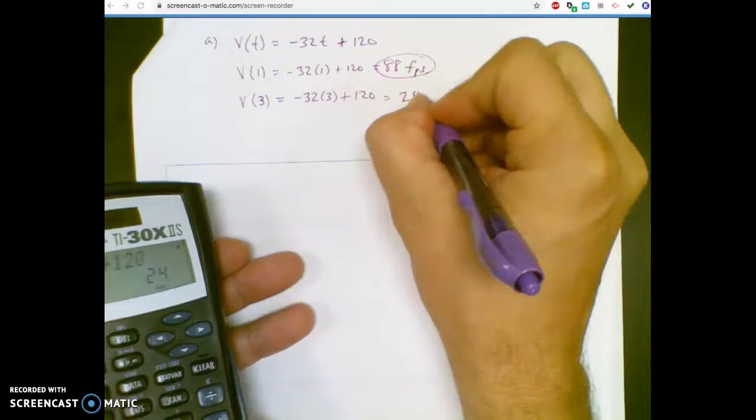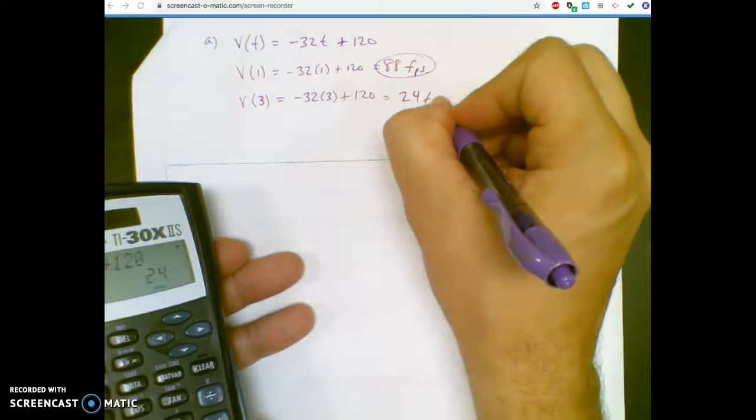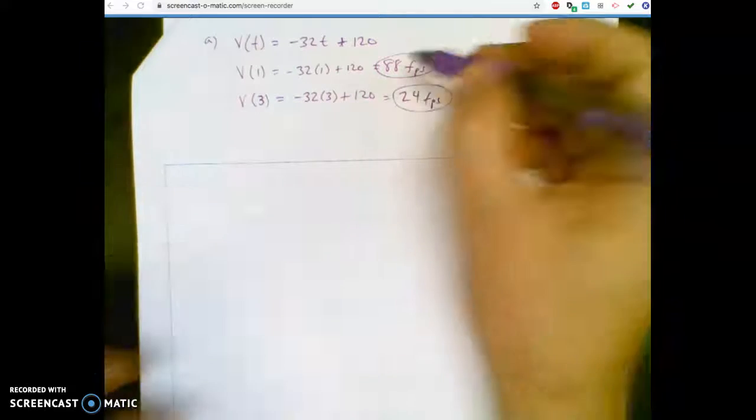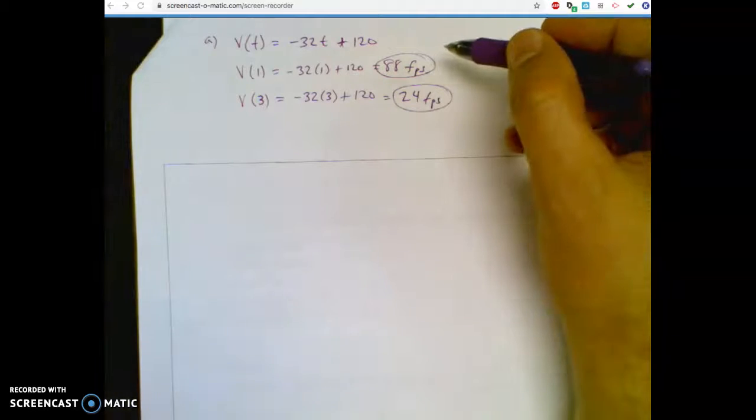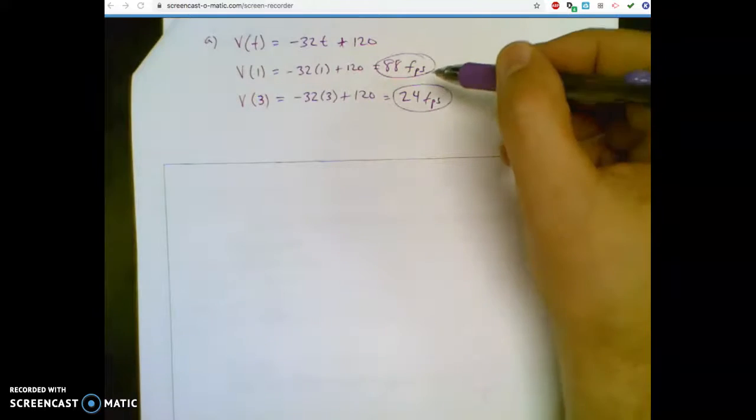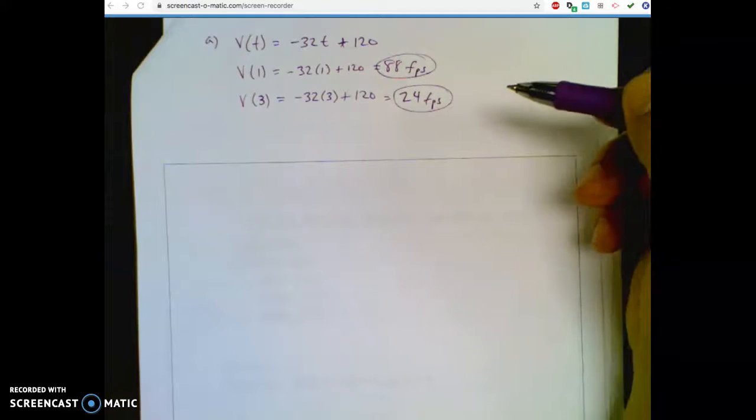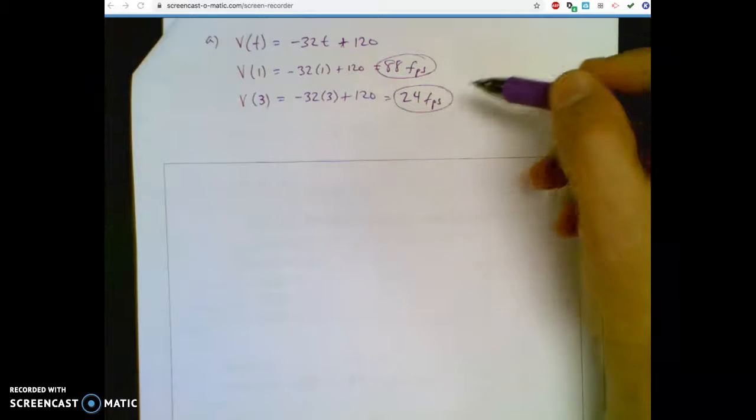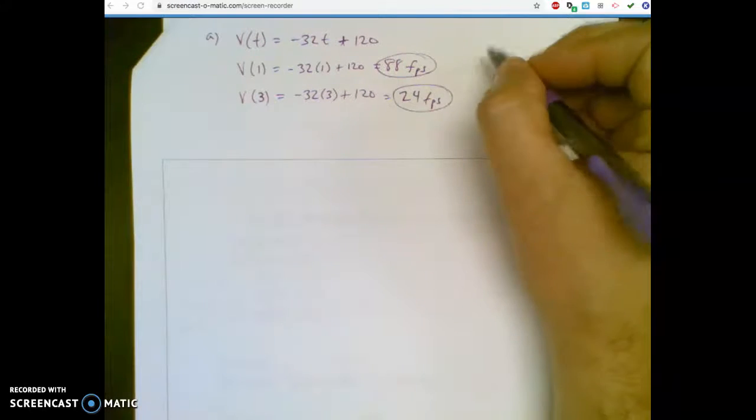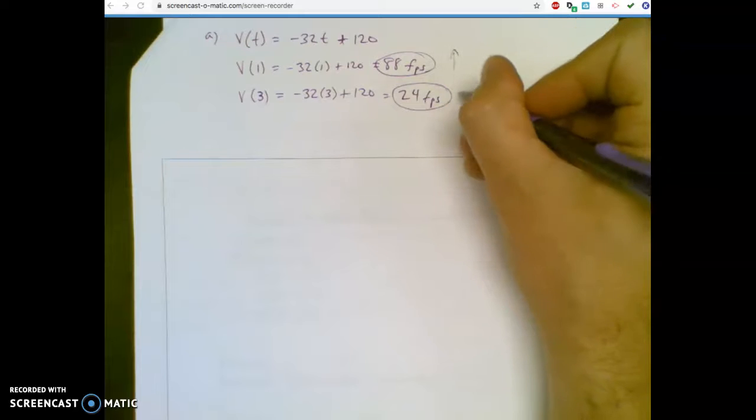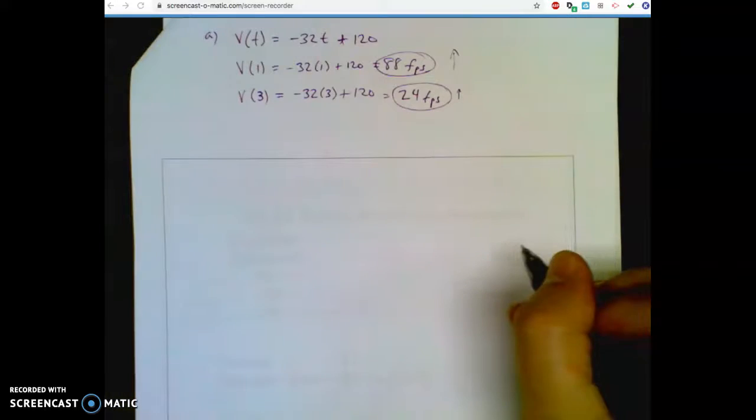Oh, it's slowing down big time. So it started off really fast. One second in, it was down to 88 feet per second, which is still arguably fast. Now it's getting slower. It's getting up near the top, 24 feet per second. But is it still moving up or down? Well, since this velocity, which has direction, is positive, it's still moving up. So this is fast, this is a little slower, but it's still going up.